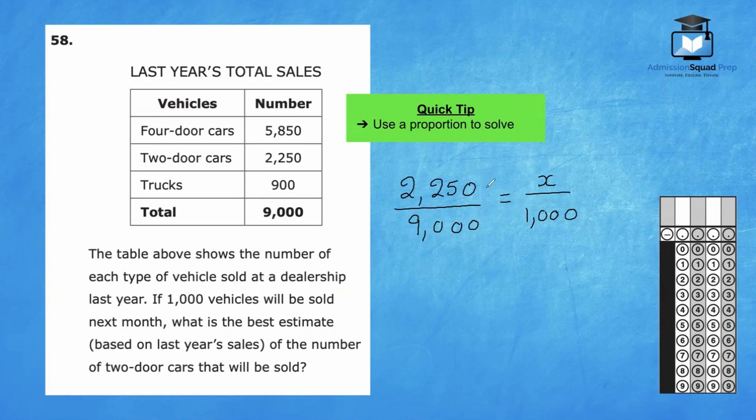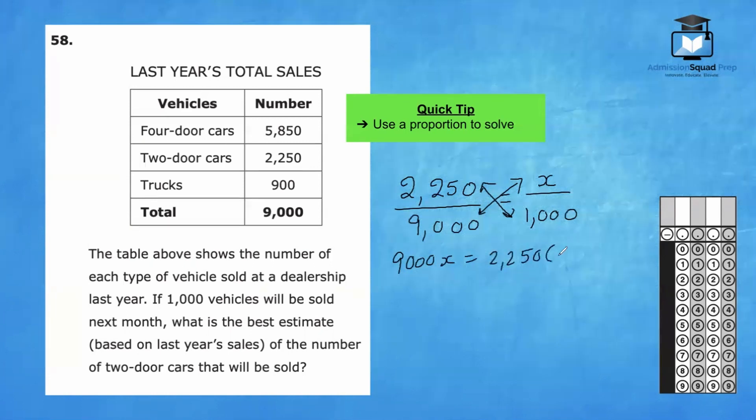Now that we have our proportion, we can go ahead and cross multiply. So we have 9,000x equals 2,250 times 1,000. I prefer to not multiply right away, but instead leave the numbers in factored form, meaning 2,250 times 1,000 can remain just this way.